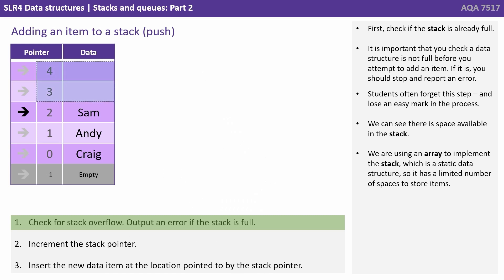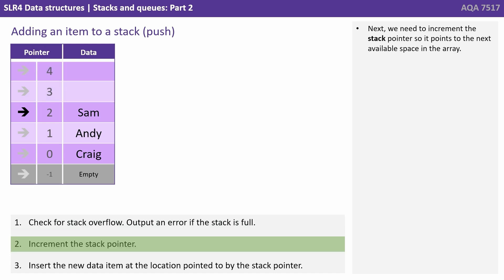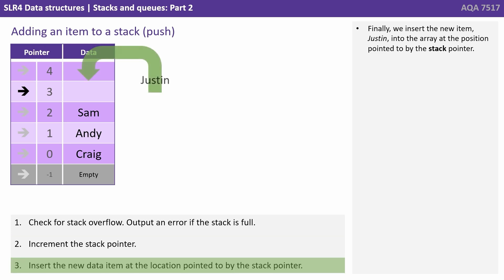We can see there's space available in the stack. We're using an array to implement the stack, which is a static data structure, so it has a limited number of spaces to store items. Next, we need to increment the stack pointer so it points to the next available space in the array. Finally, we insert the new item, Justin, into the array at the position pointed to by the stack pointer.